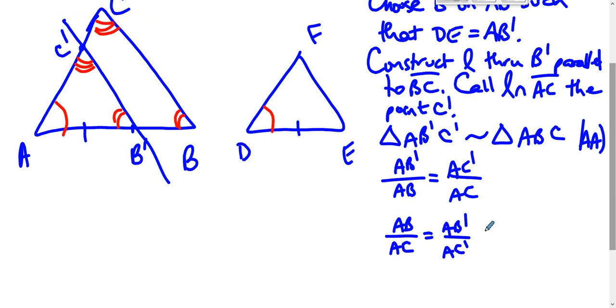And we made AB prime so that it was DE. And what does that mean? Therefore, these are two fractions that are equal and their numerators are equal.